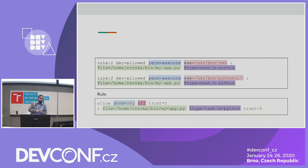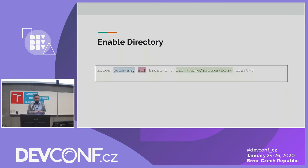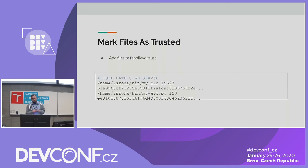Another way to enable running applications in the home directory is to allow the whole directory in the object option — but that's not very wise because you can then run almost everything in the home directory. The last option is to mark these files as trusted and put them in the FAPOLICYD trust file. If they are trusted, they can be run or executed.